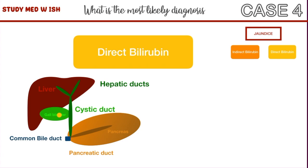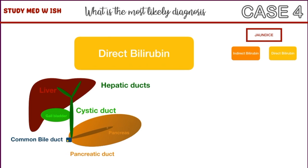It is stored and concentrated in the gallbladder and ultimately empties into the cystic duct and goes into the common bile duct. Secretions from the pancreas flow through the pancreatic duct and come into the common bile duct. Both direct bilirubin and pancreatic secretions flow through the common bile duct into the intestine.